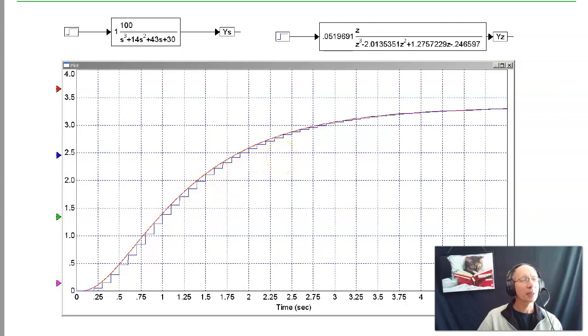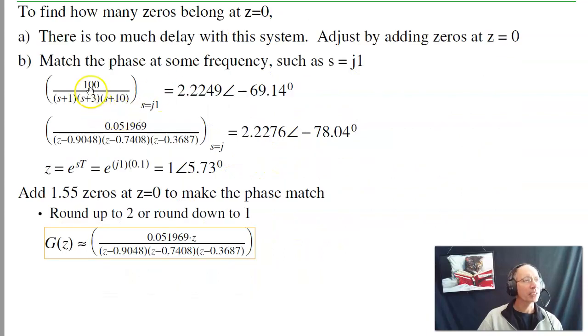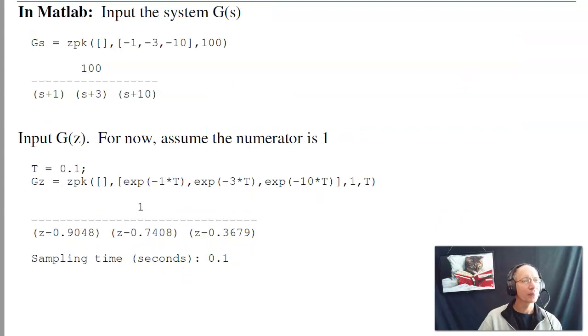So that's another way to do it. That's actually my preference. What I like about it is you can see the poles. Each pole maps as e^(sT). So here's the pole at -1, pole at -3, pole at -10. And it saves a whole lot of work. I don't have to do a half hour of algebra trying to simplify a system. But it's really your choice.